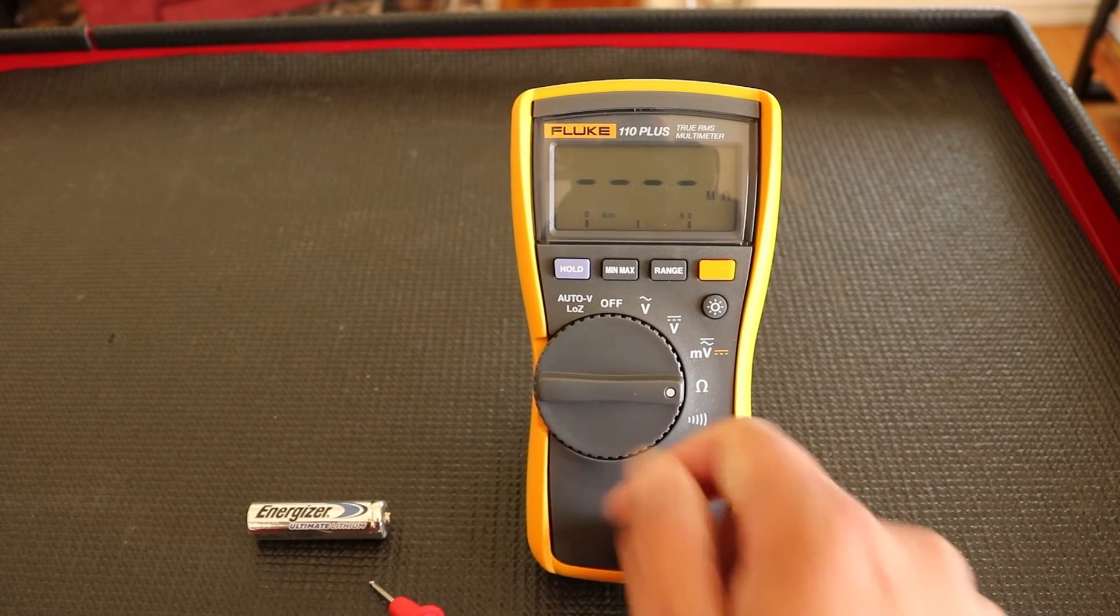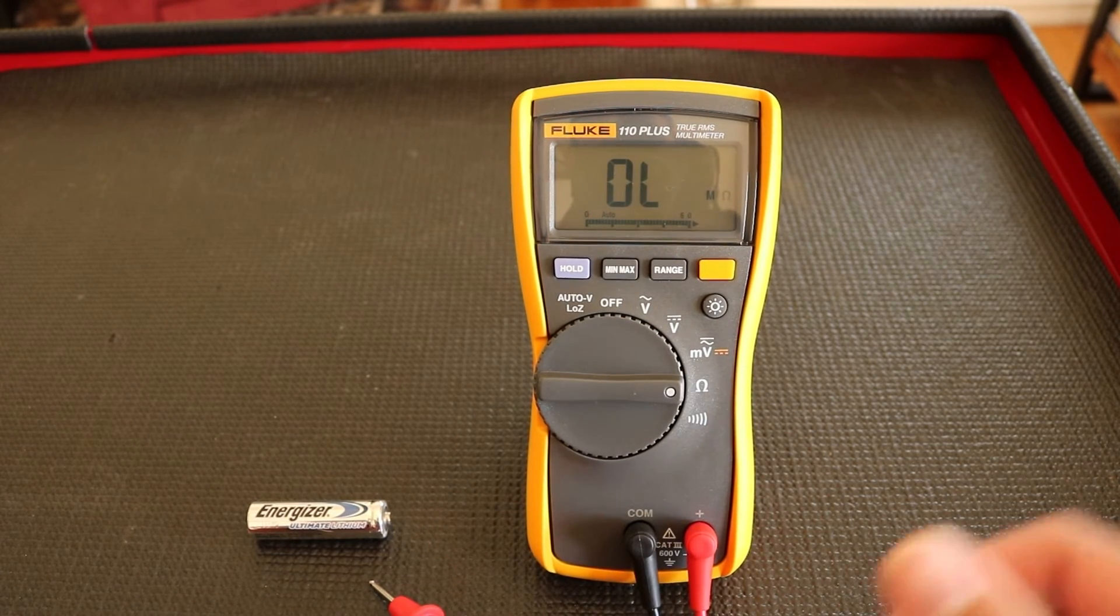And this will allow you to test both AC and DC millivolts. Right below it is the ohm symbol, and this is going to allow you to test resistance.